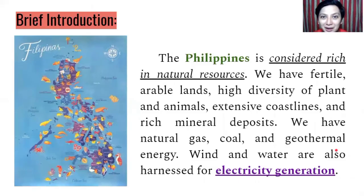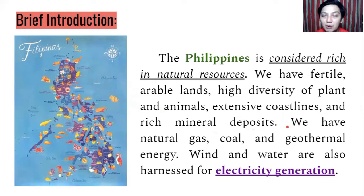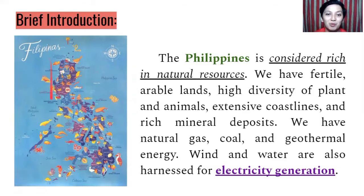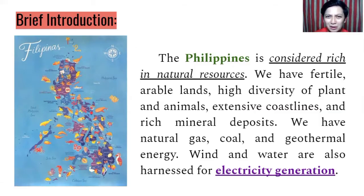We are lucky here in the Philippines because the Philippines is considered rich in natural resources. We have fertile, arable lands, high diversity of plants and animals, extensive coastlines, and rich mineral deposits. We have natural gas, coal, and geothermal energy. Wind and water are also harnessed for electricity generation — we have windmills and water mills to generate electricity. Since we are an archipelago, we are surrounded by water, so most of our natural resources come from the ocean. And since we are made up of 7,641 islands, we have a high diversity of plants and animals.